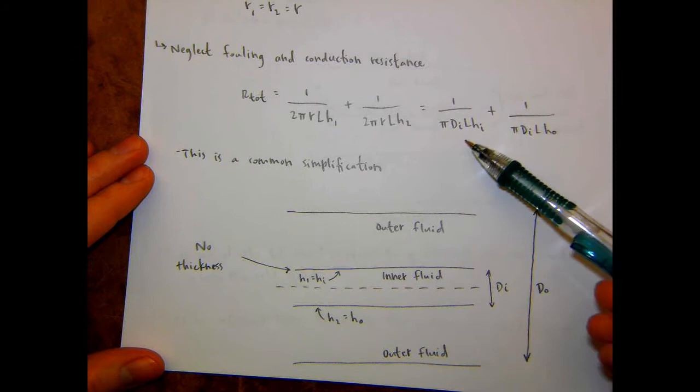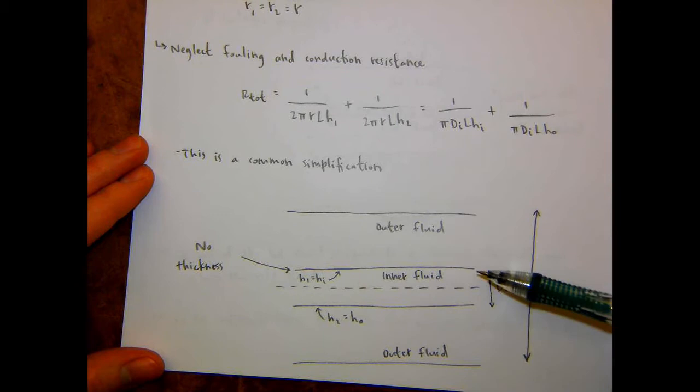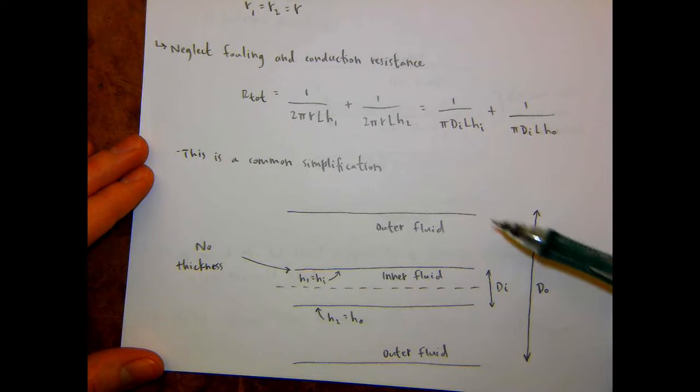For the area, it's important to note that for both the convection terms - the convection resistance terms - because you're looking at the convection resistance for the inner fluid and for the outer fluid, the appropriate diameter is the inner diameter in both of those cases.